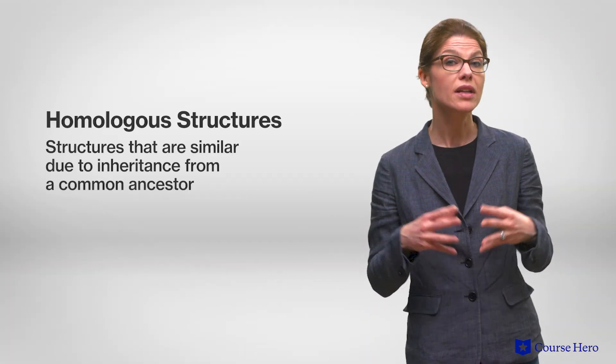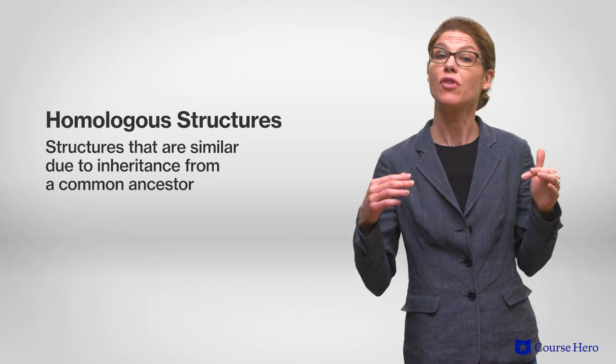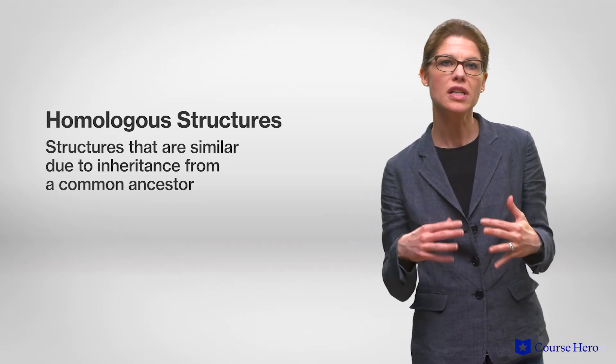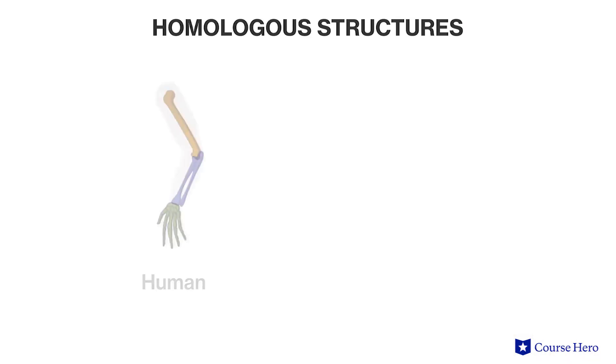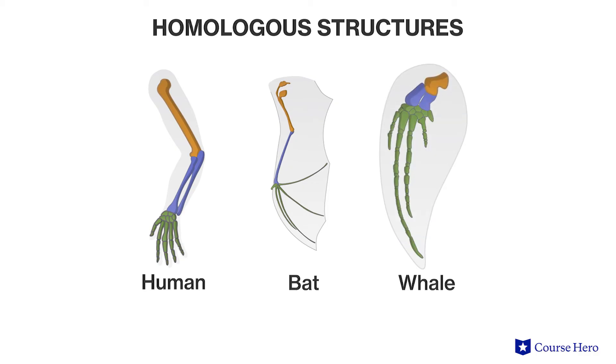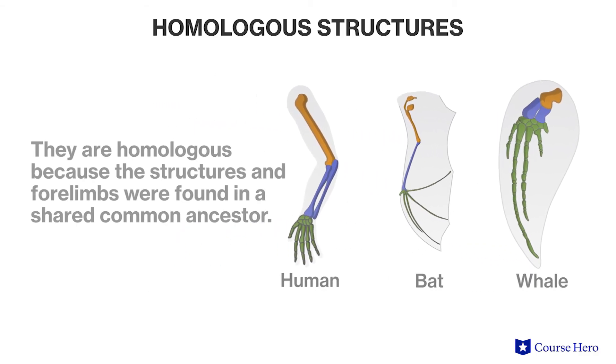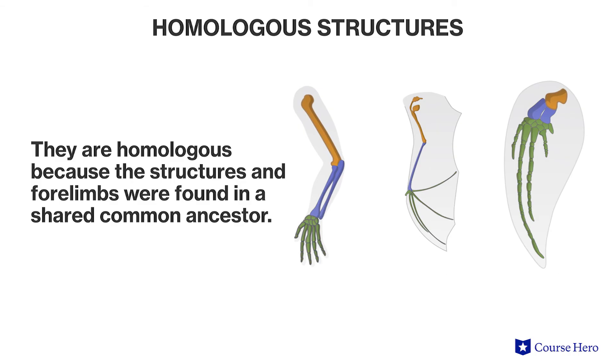Homologous structures are similar in organisms as a result of inheritance from a common ancestor — an earlier organism that, through evolution, gave rise to new related species. For example, the forelimbs of a human, a bat, and a whale have evolved to meet the specific needs of each species, but they are homologous because the structures were found in a shared common ancestor. The same is true for body parts of insects, such as antennae and mouth parts. A grasshopper chews its food, but a butterfly sucks pollen. Antennae may be used to touch, smell, and even hear. These structures are also homologous because they evolved from a common ancestor.